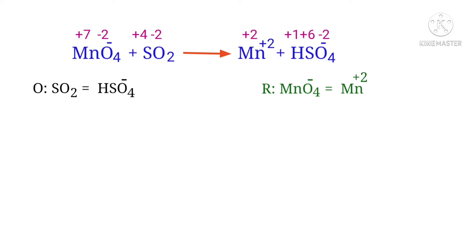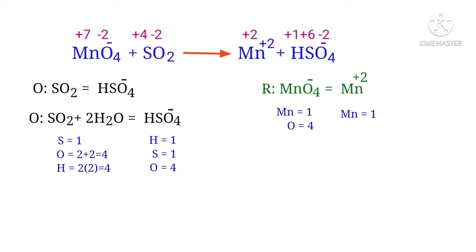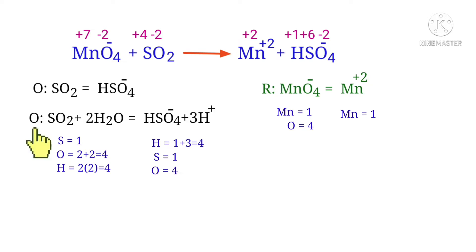Now you can balance the number of atoms in the two half reactions. In the oxidation half reaction, to balance the oxygen atoms, you can produce water molecules. The oxygen atoms are balanced. Now you can balance the hydrogen atoms — to do this, you can produce H plus ions. The number of atoms in the oxidation half reaction are balanced.